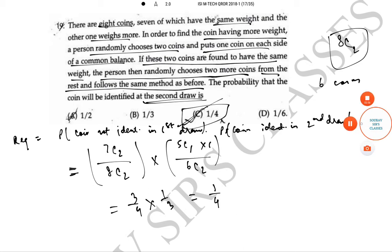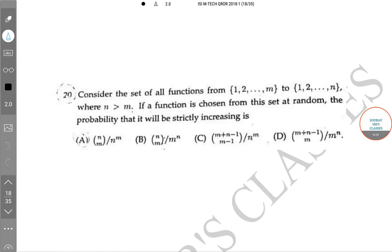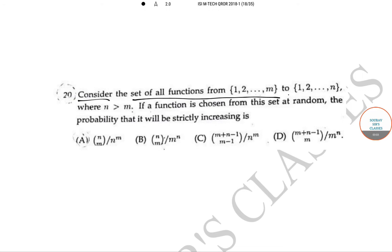The next question is: Consider the set of all functions from 1 to m to 1 to n where n greater than m. If a function is chosen from this set at random the probability that it will be strictly increasing is